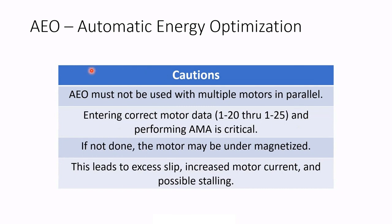Some things to be aware of: you cannot use the AEO function when you're running multiple motors in parallel on a single drive, such as a fan wall. That just won't work — use variable torque instead. It's very important to enter the correct motor data and perform the automatic motor adaptation in order for the AEO feature to accurately calculate how much it can reduce voltage. If these aren't done, the motor may be under-magnetized, resulting in excess slip, an increase in motor current, and the motor can possibly stall out entirely.